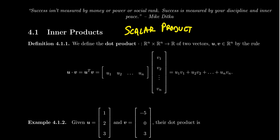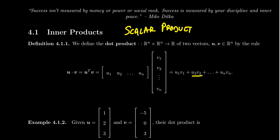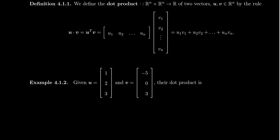The dot product is the canonical inner product for the real numbers. It's a function which goes from Rn times Rn to R. We take a vector in Rn, combine it with another vector in Rn, and produce a scalar — a number in R. The dot product is sometimes called the scalar product because we multiply together vectors but produce a scalar value. Prior to Chapter 4, we hadn't really developed a notion of multiplication of vectors.